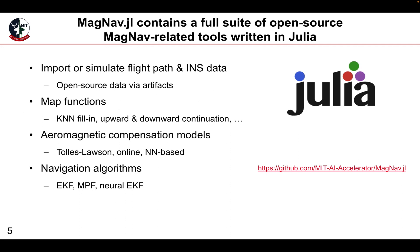The package contains many tools to carry out this process. As mentioned, flight data can be imported, but it can also be simulated. The package contains custom open source data that can be automatically downloaded via artifacts. There are many functions available for magnetic anomaly map processing, especially filling in the map with a KNN and upward and downward continuation. There are also aeromagnetic compensation models, which is a key feature of this package and which it was originally developed for to do research at MIT. For that reason, there are many different models available, some of which are very experimental.